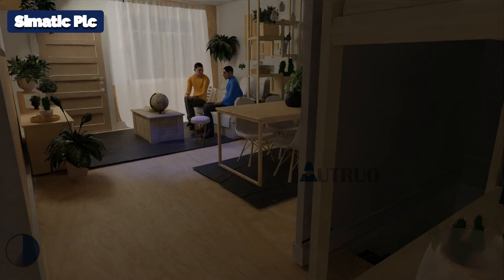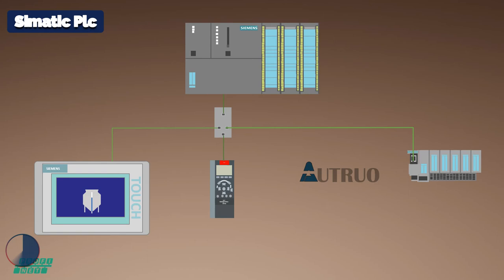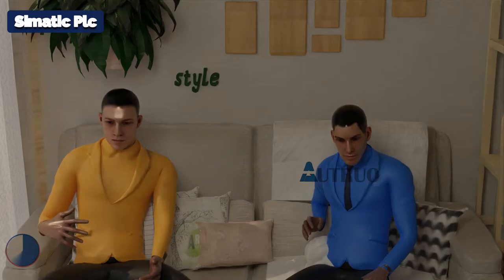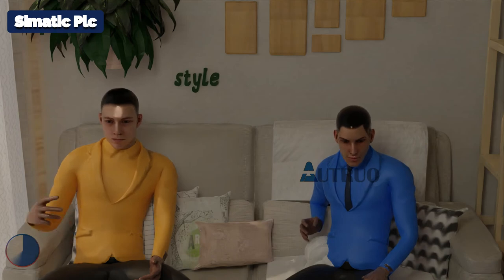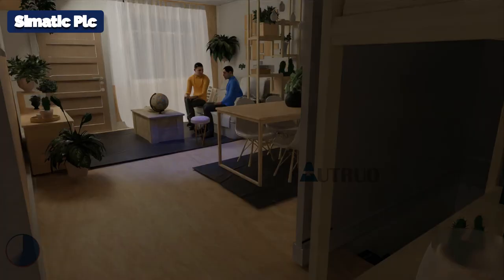Totally Integrated Automation represented the ultimate debut of the age of decentralization. The increasing miniaturization of electronics made it possible to put more and more functionality into increasingly compact devices. In 2003, Profinet's communication protocol was developed, ensuring that data are exchanged between controllers and devices in an automation setting. Profinet defines cyclic and acyclic communication between components, including diagnostics, functional safety, alarms, and additional information.